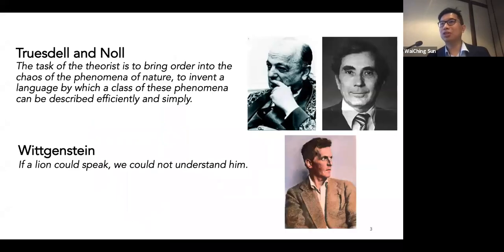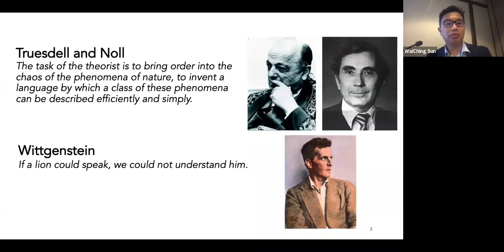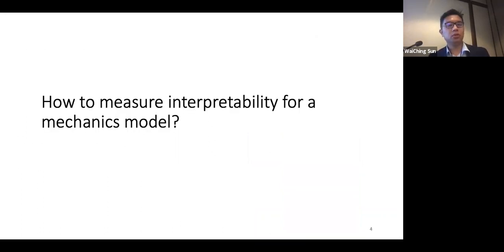Because we are in an afternoon liar mode, I want to start with a quote. The theory of physics is to bring order into the chaos of the phenomena of nature, using a language by which a vast cast of physical phenomena can be described effectively and simply. But we also know that if a lion could speak, we could not understand him. Our predictions generated from neural networks could be something really hard to understand or interpret. The real question is: how do we measure what is interpretable, and what is the right way to enhance it?